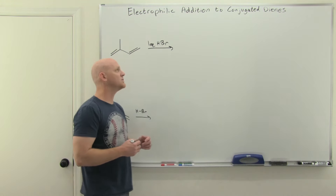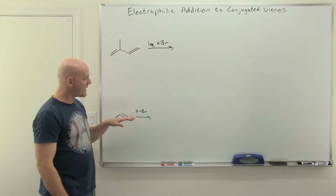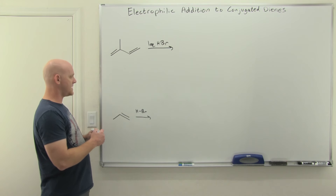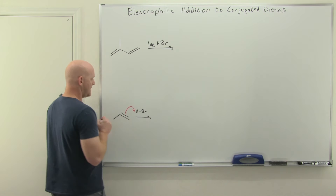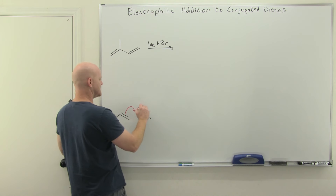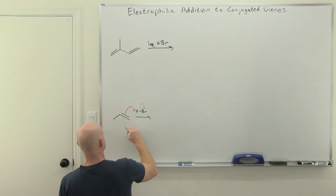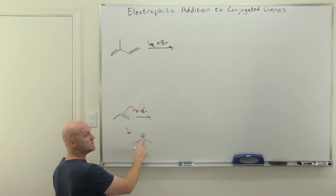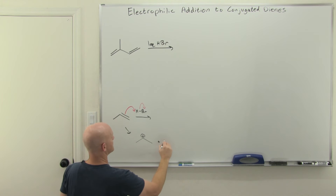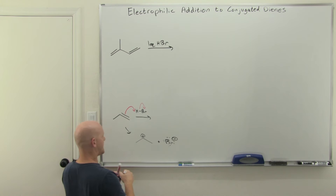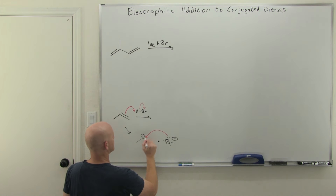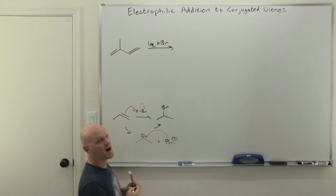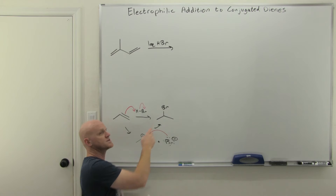Before we dive into electrophilic addition to conjugated dienes, let me remind you what electrophilic addition to a plain alkene looks like — specifically with HBr. First step: the alkene attacks the H, the bond between H and Br breaks. H attaches to the less-substituted side, leaving the more-substituted, more-stable carbocation as well as a bromide ion. That bromide ion comes back and does nucleophilic attack, leading to the final product. This was Markovnikov addition — H on the less-substituted side, bromine on the more-substituted side.